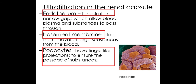Ultrafiltration occurs because of different barriers present. The first barrier is the endothelium itself — the actual wall of the blood vessel inside the glomerulus — which contains tiny pores called fenestrations. The second barrier is the basement membrane, which stops large substances such as proteins from being removed from the blood. The last barrier consists of podocytes, which are specialised finger-like projections that ensure the passage of substances.